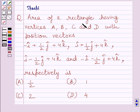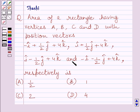The question says: find the area of a rectangle having vertices A, B, C and D with position vectors minus i plus 1/2 j plus 4k, i plus 1/2 j plus 4k, i minus 1/2 j plus 4k respectively. The answer choices are A: 1/2, B: 1, C: 2, D: 4.